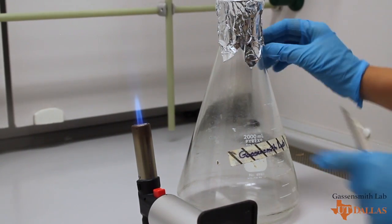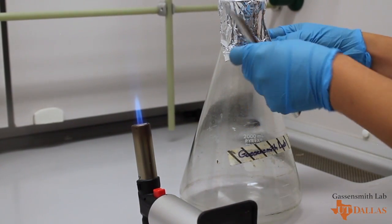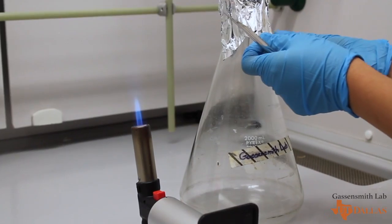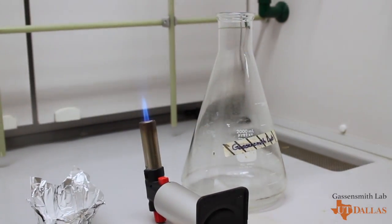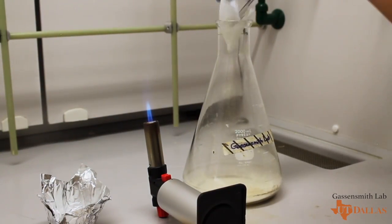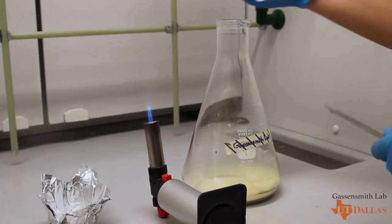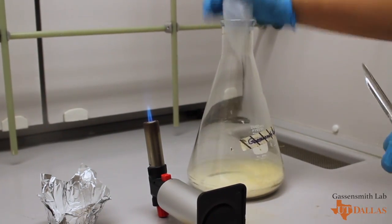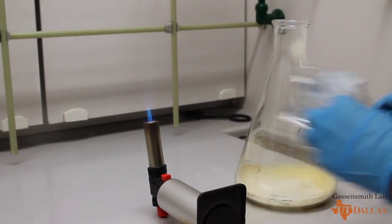When we put the ingredients into the flask, we need to do so near an open flame source to keep the area sterile. SOB media or super optimal broth media is a nutrient rich bacterial growth medium. This lets the E. coli bacteria we use grow at a fast rate.